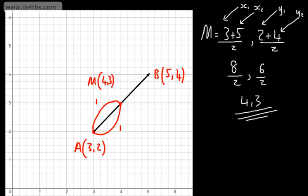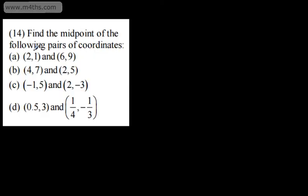So let's look at using the midpoint formula with some examples now where we've got 2 sets of coordinates. We're asked to find the midpoint of the following pairs of coordinates. So in part A, we've got (2, 1) and (6, 9). So let's write this in. The midpoint,